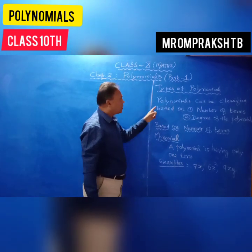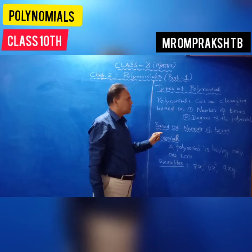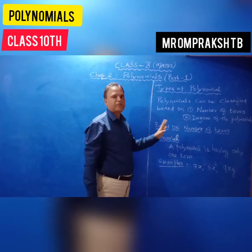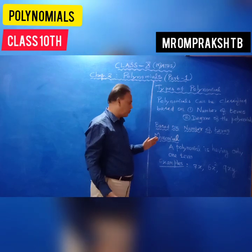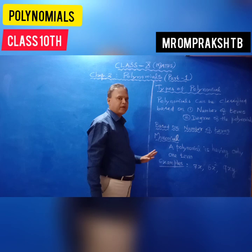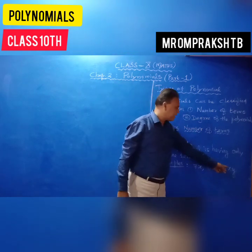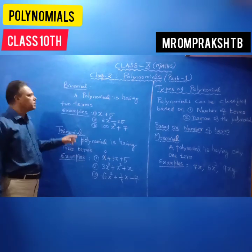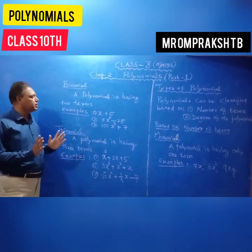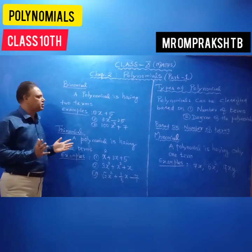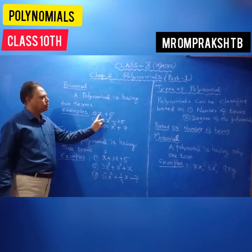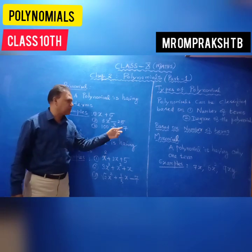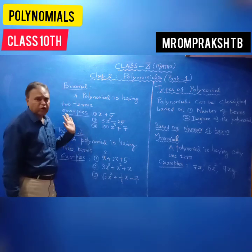Polynomials can be classified based on the number of terms and the degree of the polynomial. Based on number of terms: a monomial has only one term — for example, 7x, 6x squared, 9xy. A binomial has two terms — for example, x plus 5, 3x squared minus 25, or 100x power 5 plus 7. These are binomials.